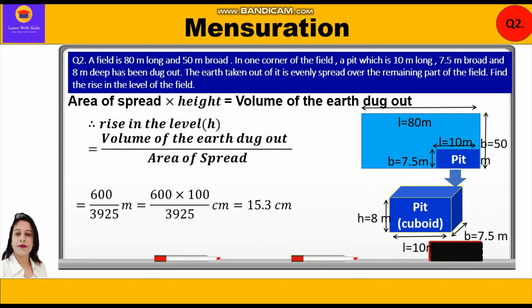Converting to centimeters by multiplying by 100: 600 × 100 ÷ 3925 = 15.3 centimeters. So the height to which the level of the field has risen is 15.3 centimeters.